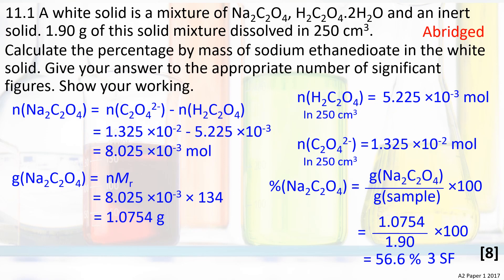The amount of sodium ethane dioate is the difference between the amount of dioate ions and the amount of ethane dioic acid. This works out to be 8.025 × 10⁻³ moles.